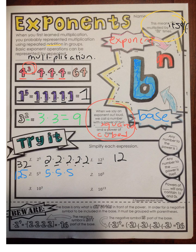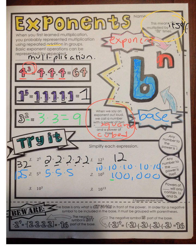Now let's take a look at 10 to the fifth power. We have 10 written out five times, which gives us 100,000 — a 1 with five zeros. Do you notice it's a 1 with five zeros? That's because of our base-10 system. So 10 to the third power would be a 1 with three zeros, and 10 to the thirteenth would be a 1 with 13 zeros.